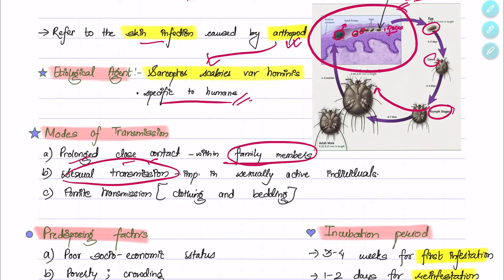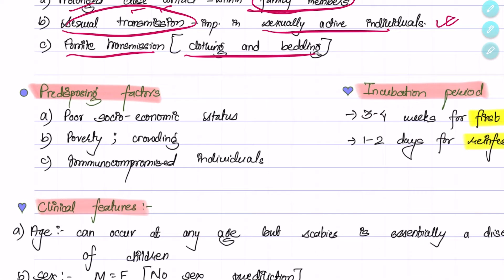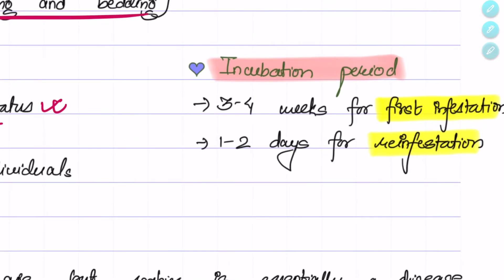Sexual transmission is also seen, so it is important in sexually active individuals, and fomite transmission through clothing and bedding. The predisposing factors for scabies are poor socioeconomic status, poverty, crowding, and immunocompromised individuals. The incubation period for first infestation is three to four weeks, while it is only one to two days for reinfestation.